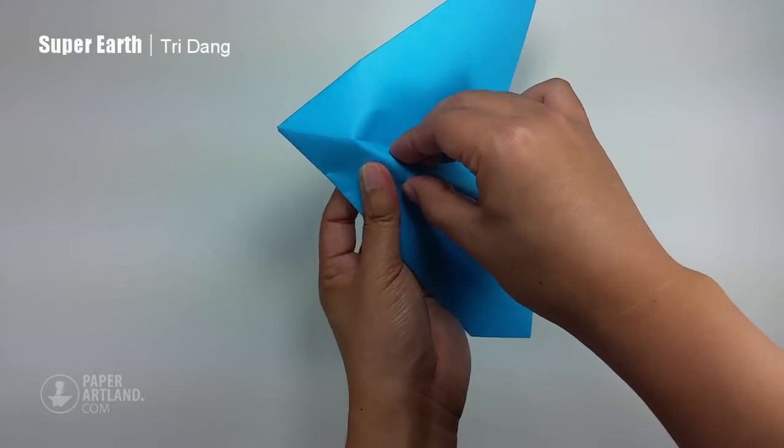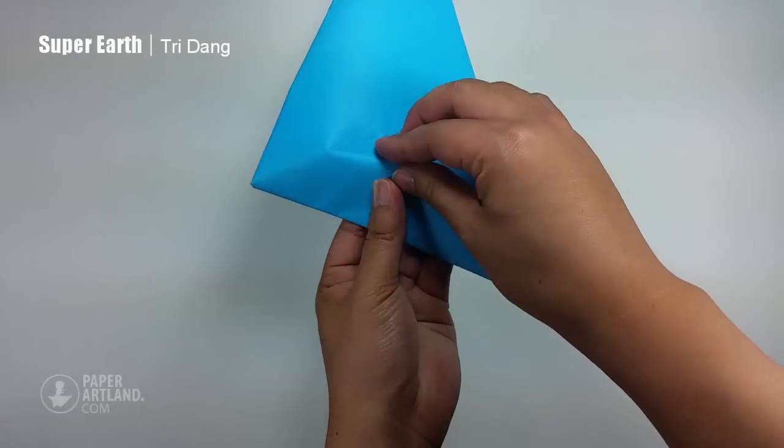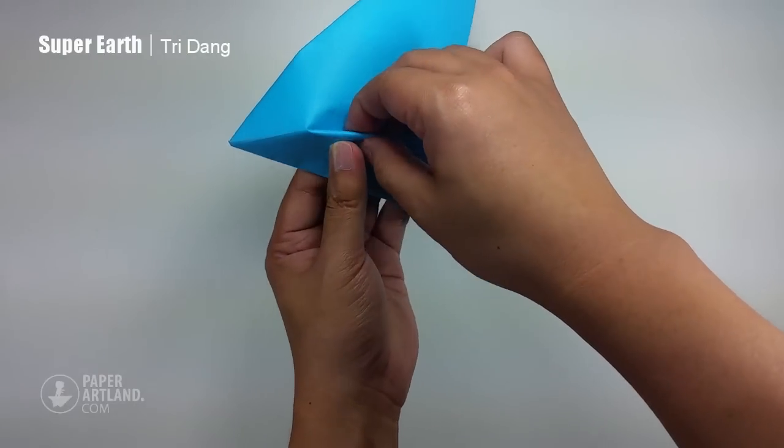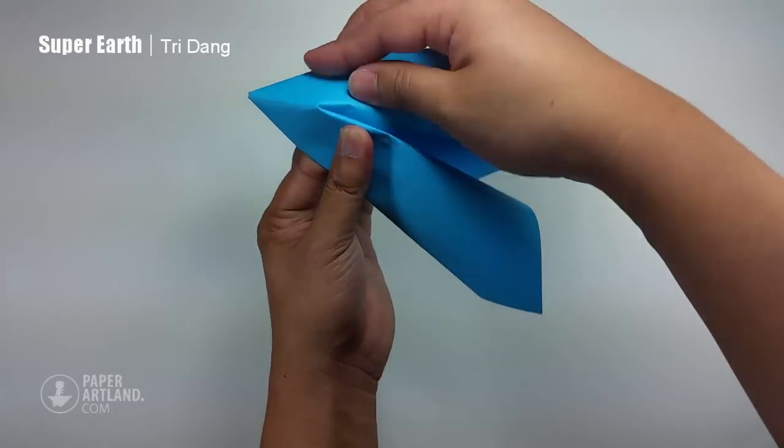So just curve it down and then just push it in slowly. After you finish one side, you can do the other side.